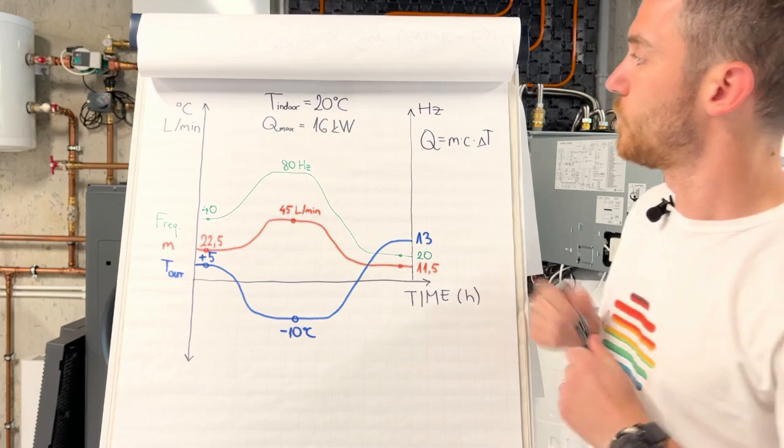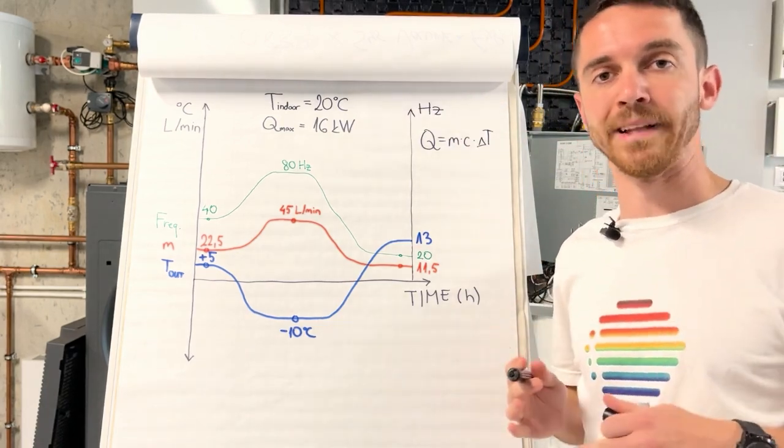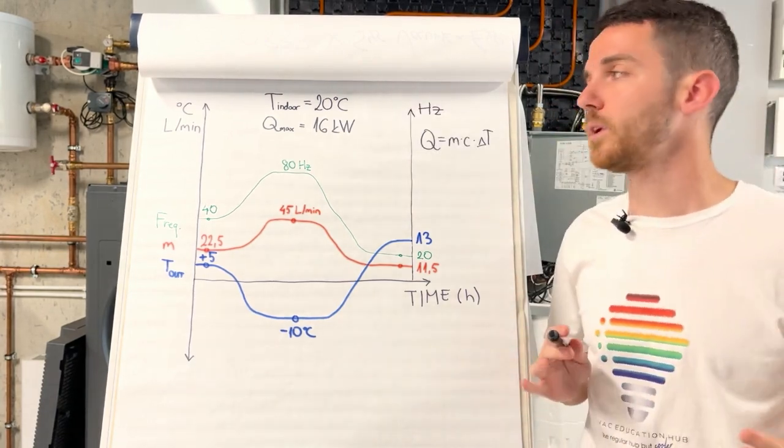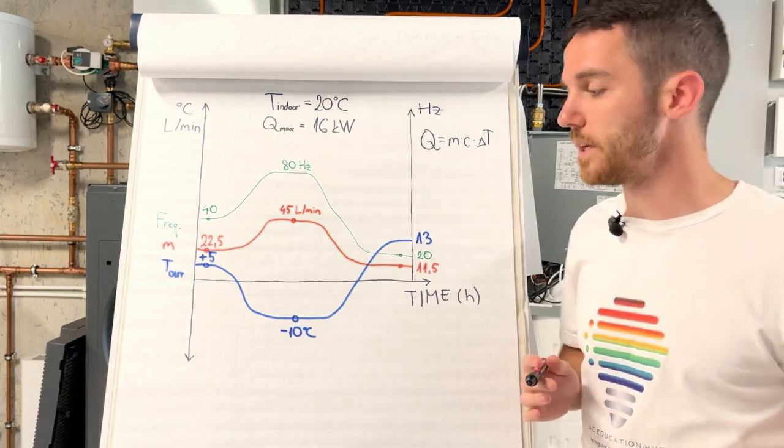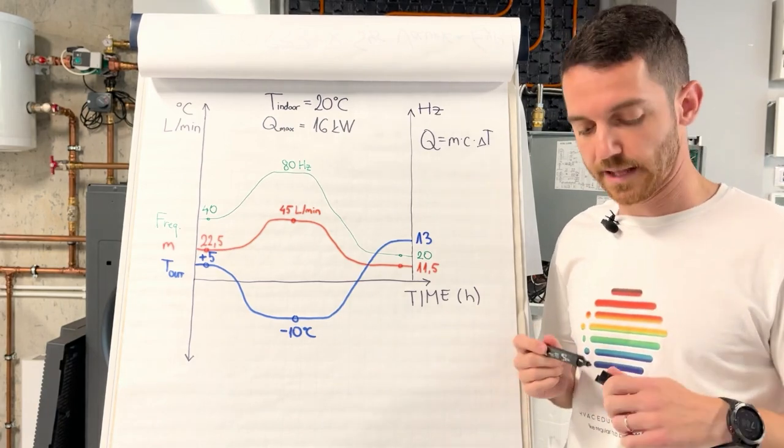Here we have indoor temperature of 20 degrees Celsius which we want to maintain in our house. We have 16 kilowatt unit and our design outdoor temperature is minus 10. Let's see what we have on minus 10 degrees.